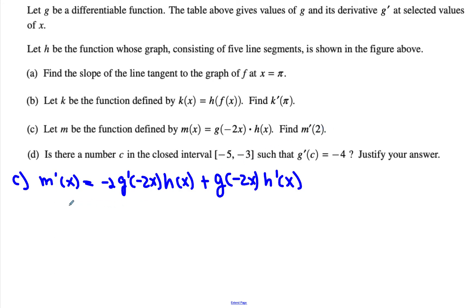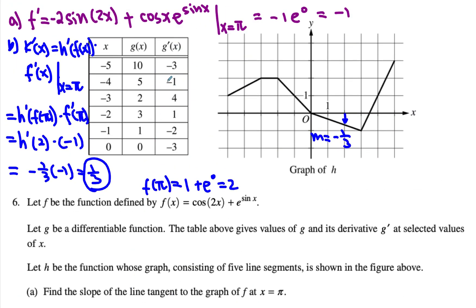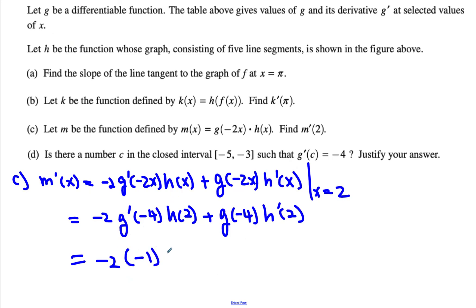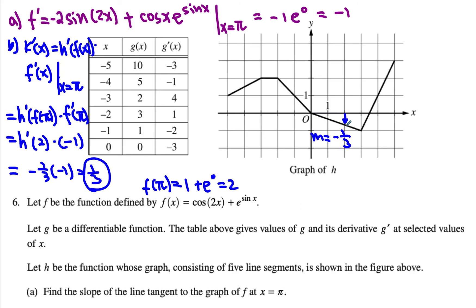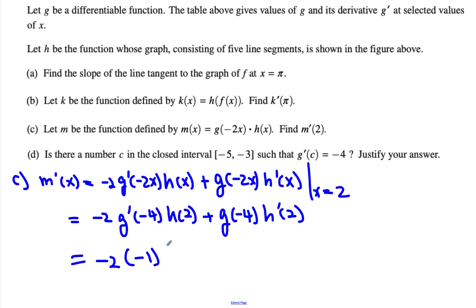Now we have to plug in two. So then when x equals two, what we end up getting is negative two, g prime of negative four times h of two, plus g of negative four and then h prime of two. And then there are a couple values that we already found. So what we end up getting is negative two was there. G prime of negative four is negative one here, you can see that. And then h of two, h of two is somewhere in the middle, you can see that. It's going down by one third, so when we go over two, then we're already down by two thirds, so we get negative two thirds.